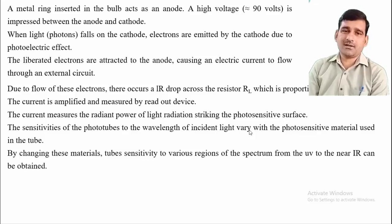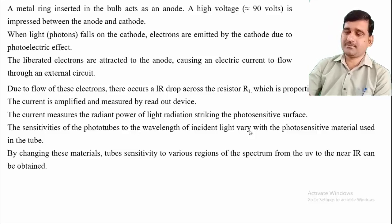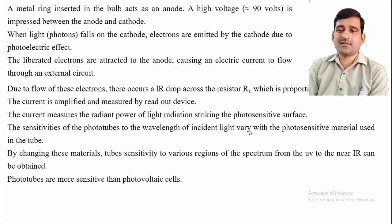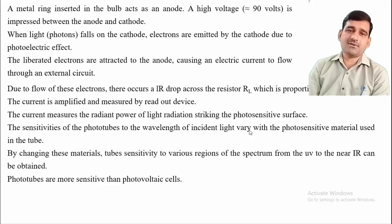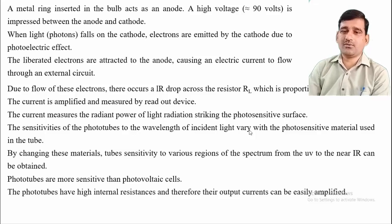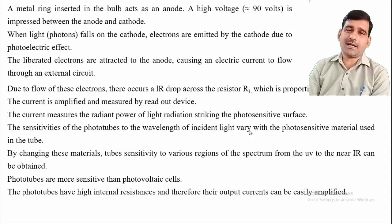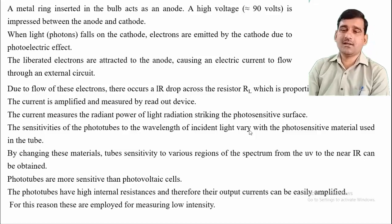Photo tubes are more sensitive than photovoltaic cells because their signals can be amplified. They have high internal resistance and therefore their output current can be easily amplified. For this reason they are employed for measuring low intensity radiations.